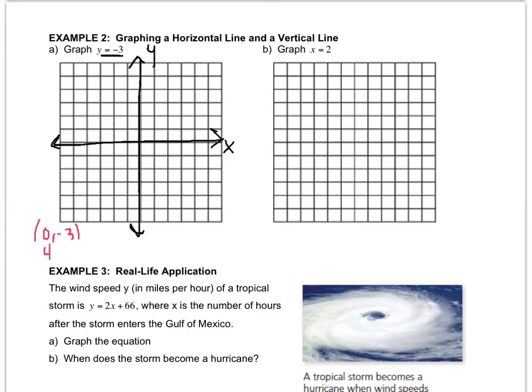0, negative 3. 4, negative 3. 2, negative 3. Negative 1, negative 3. I just randomly made up these points. So now I'll plot them.